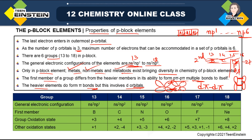Here we have the six groups with their general electronic configuration: ns²np¹, where the s electrons are fixed and only the p electrons increase. The first members are boron, carbon, nitrogen, oxygen, fluorine, and neon. The group oxidation state — also called common oxidation state — is simply the second digit of the group number.